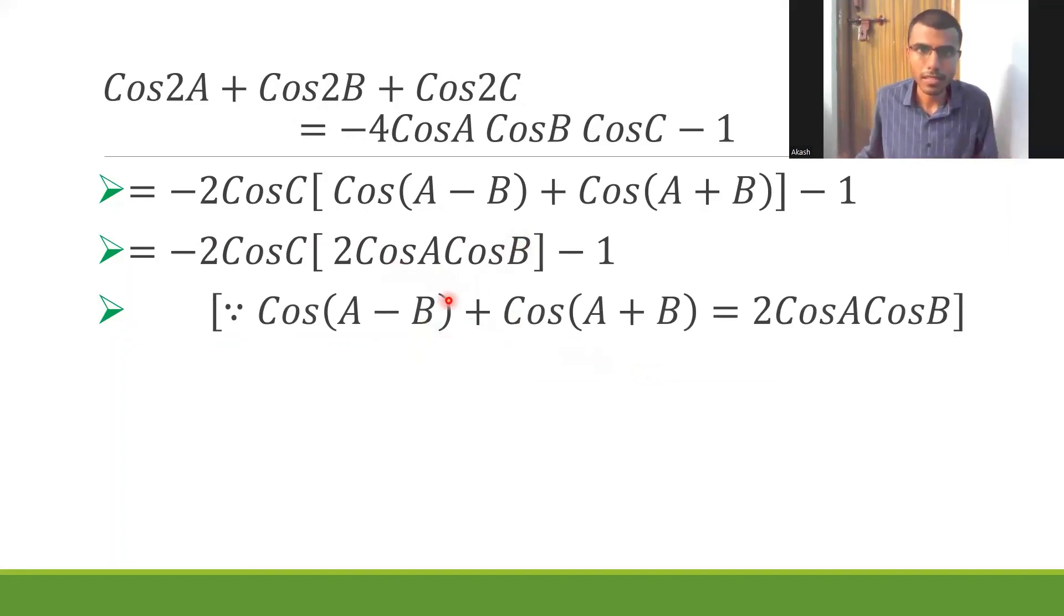Hence now, the only thing left out is just multiplication. 2×2 is 4 and -1 is there, and arrange them in order of A, B, C: -4cosAcosBcosC - 1. That's it. This is what we wanted to achieve and we are here.